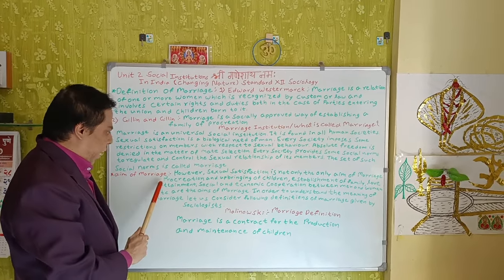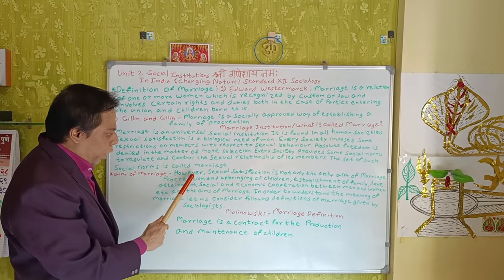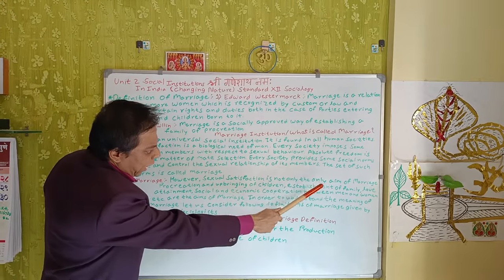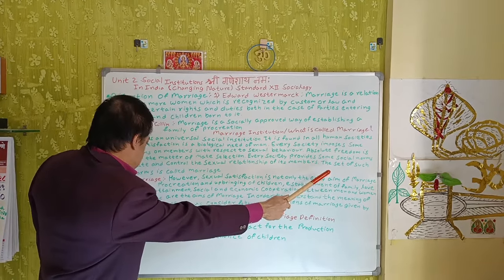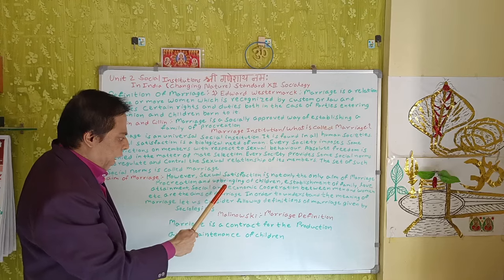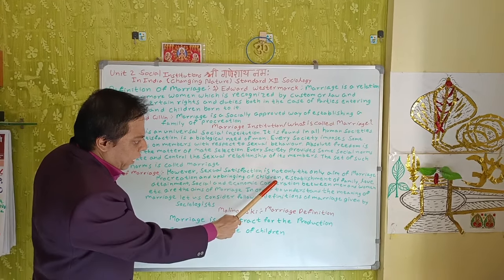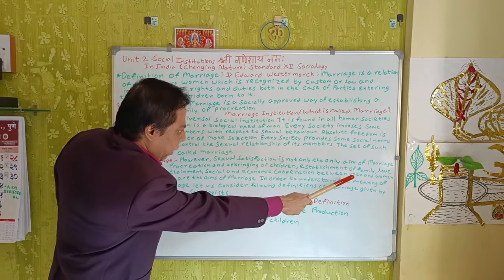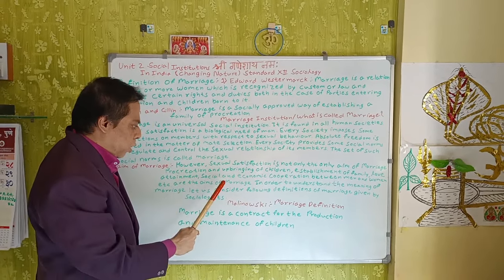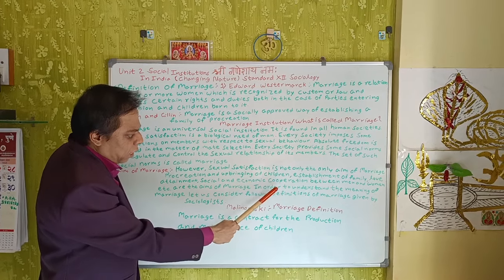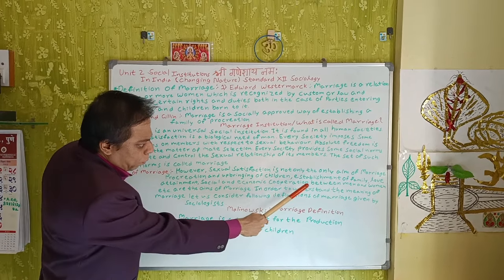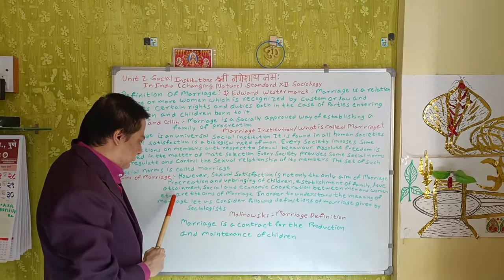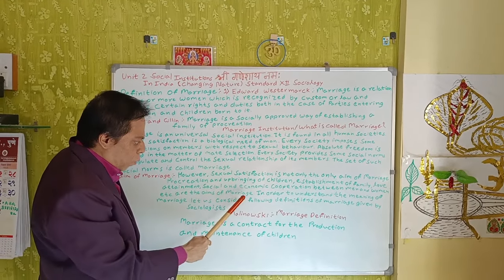The aims of marriage: However, sexual satisfaction is not only the aim of marriage — procreation and upbringing of children, establishment of family, social and economic co-operation between men and women, etc., are the aims of marriage.